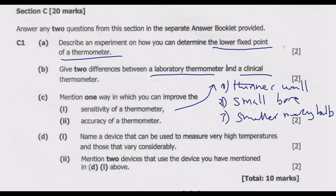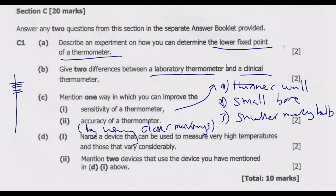We can also improve the accuracy of the thermometer by using closer markings. If the markings are closer together, this allows us to capture every small movement of the liquid column. There will be no area where we need to guess if the liquid level falls between two markings.